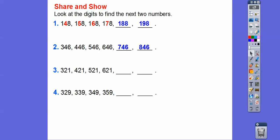321, 421. So again, the hundreds digits are changing from 3 to 4 to 5 to 6, so this one will be 7, 721, 821.